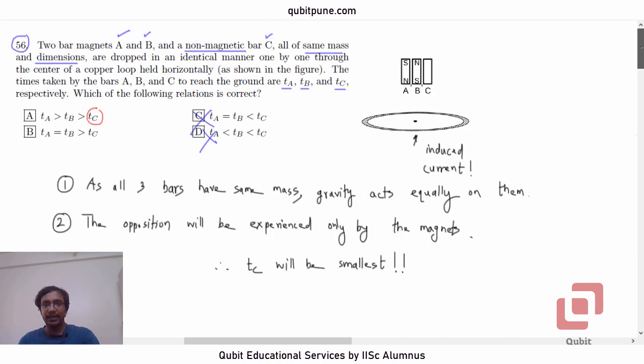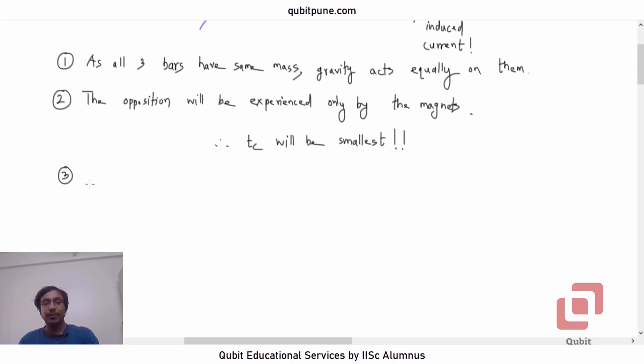Now this opposition that both these magnets A and B are going to experience, that is irrespective of the polarity or the poles which face the loop. That is our third point. Irrespective of whether N pole faces the loop or S pole, the opposite force or the opposition will be equal in magnitude.